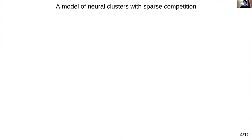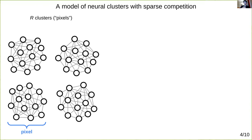So consider the following model of neural clusters with sparse competition. We'll start with R clusters, and now for the sake of argument, I will call each cluster a pixel, as we'll think of a large array of such pixels arranged into something like an image, and where you can think of R as standing for resolution, or the number of pixels.